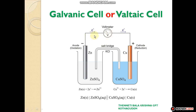How much electricity is generated is shown on the voltmeter — 1.4 volts, 2 volts, 3 volts, etc. The amount of energy generated is displayed on the voltmeter. This is the working principle of the galvanic cell.